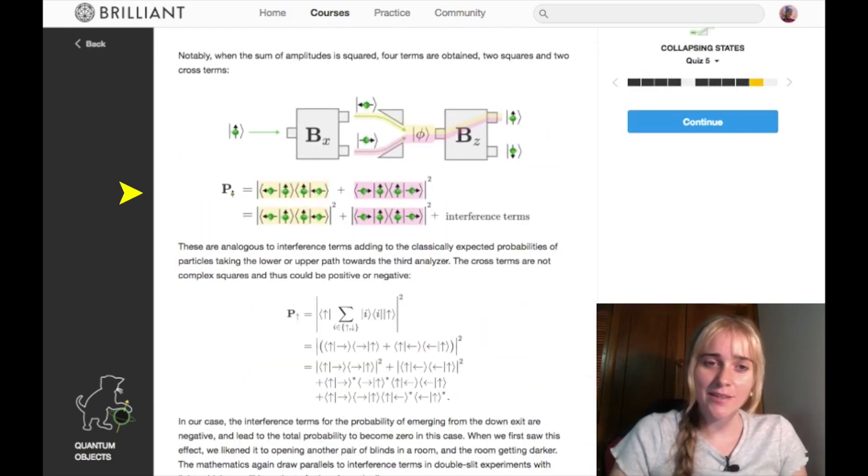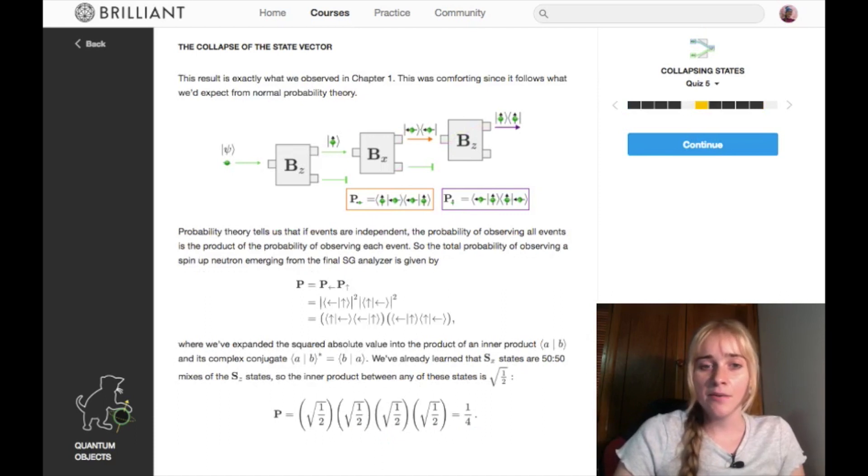All right, so when we go to calculate those probabilities which we expressed on the previous page, if you take that plus that, the magnitude squared, you get four terms - you get two squared terms plus interference or cross terms. Now they're going to work through it here, but there's one thing to refresh your mind on or learn here, and that was on a previous page. And that's when you're taking probabilities, the squared absolute value is also written as the product of an inner product and its complex conjugate.